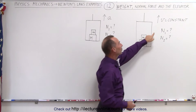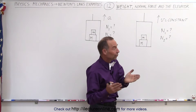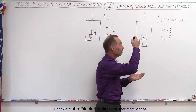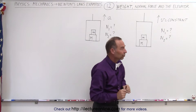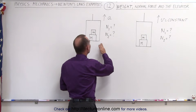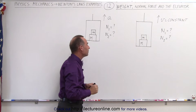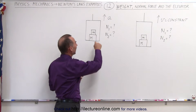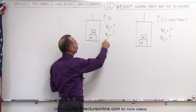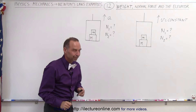The first case is where the velocity upward is constant — and it turns out it doesn't matter if the velocity is upward or downward, you get the same result. In the second example we have the acceleration upward equal to a. So what are the normal forces: n1 between the small mass and the big one, and n2 between the big one and the floor of the elevator?